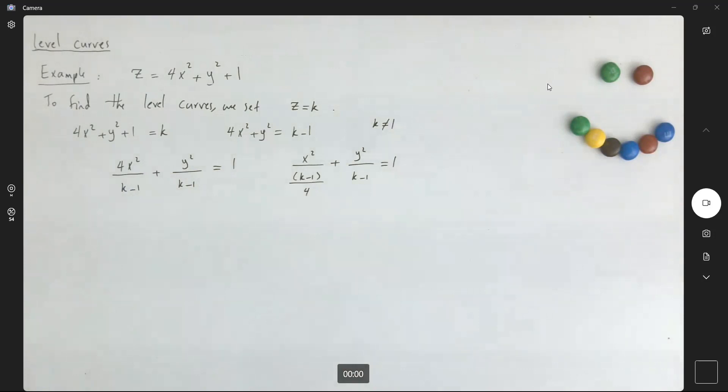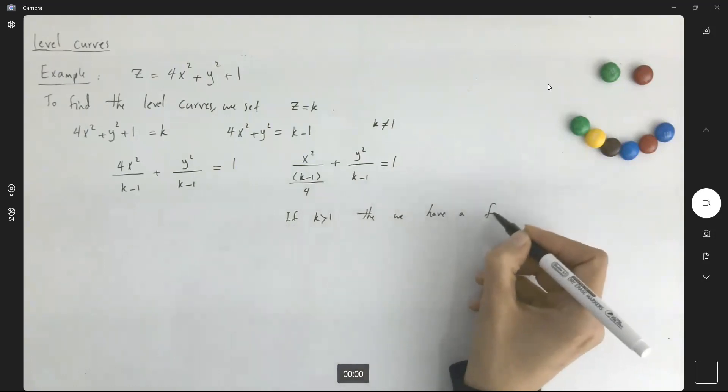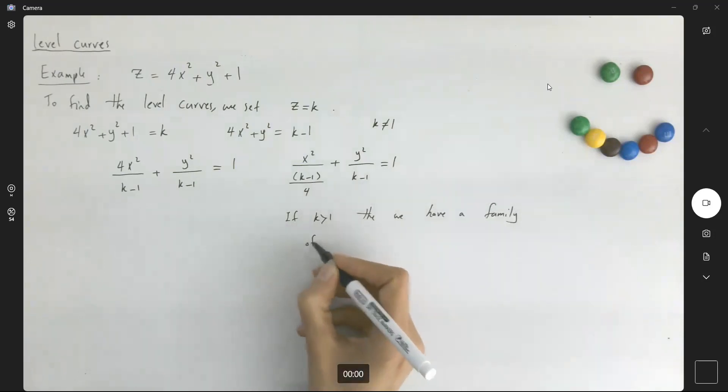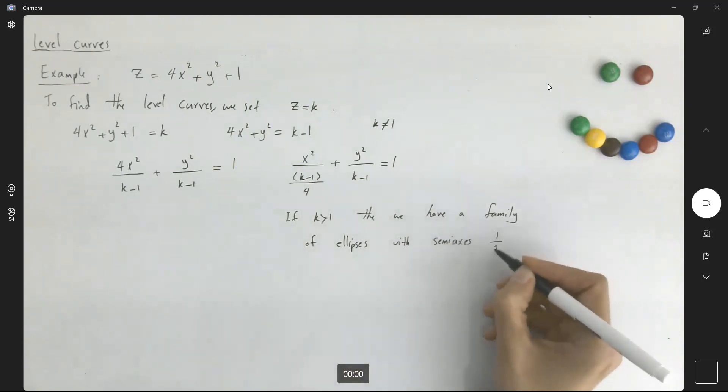Well, what do we have here? If k is larger than 1, this describes the family of ellipses. Then we have a family of ellipses with semi-axis a half square root of k minus 1 and square root of k minus 1.